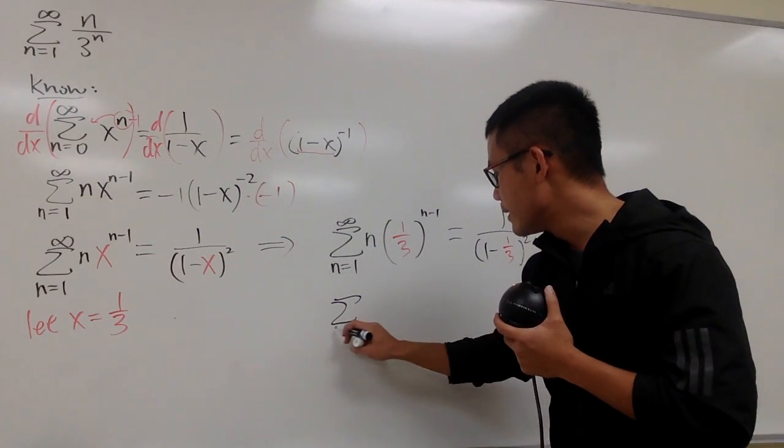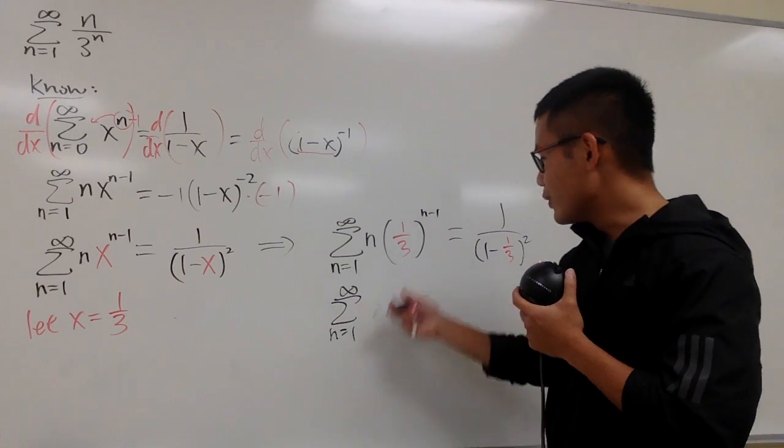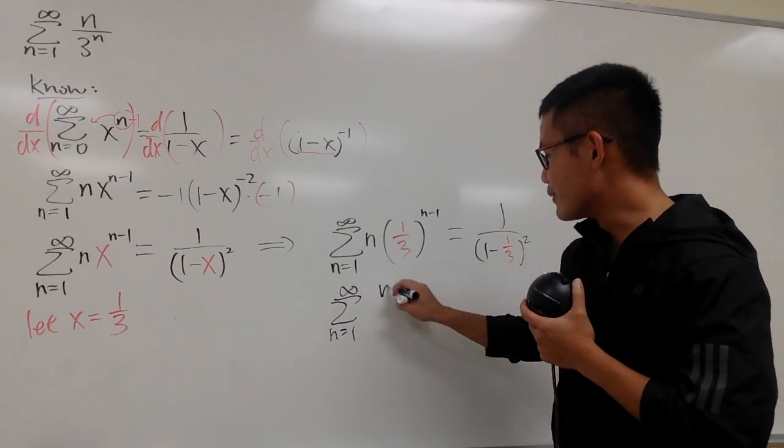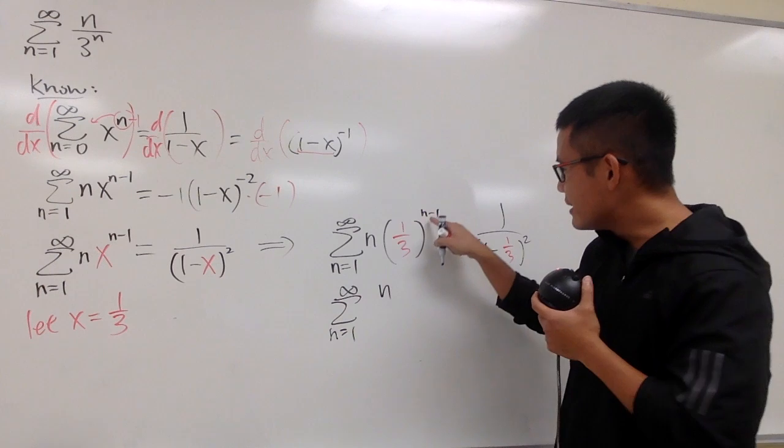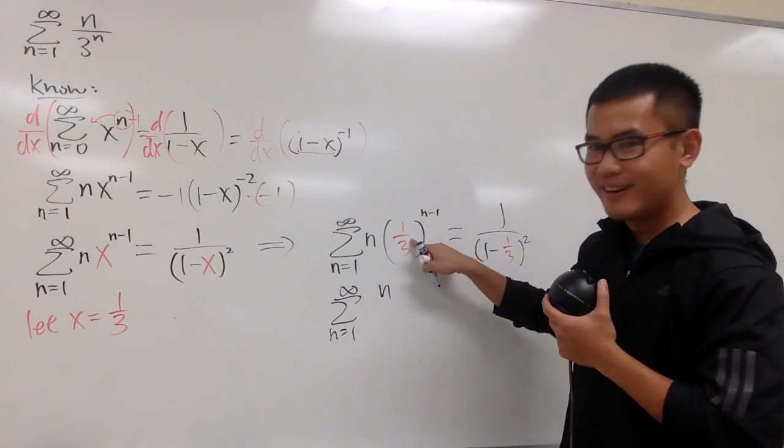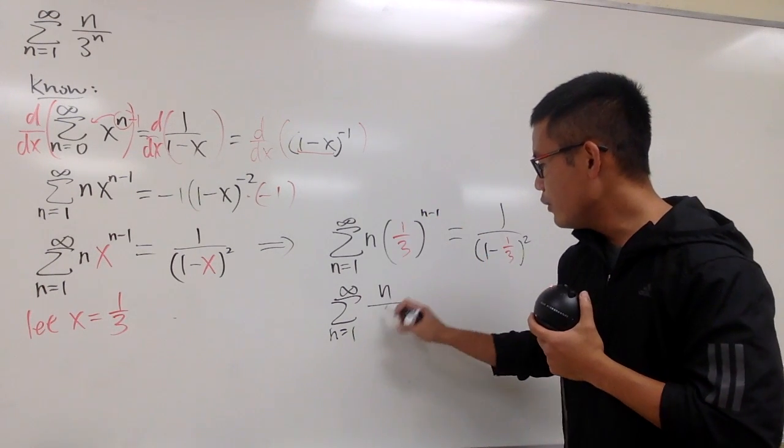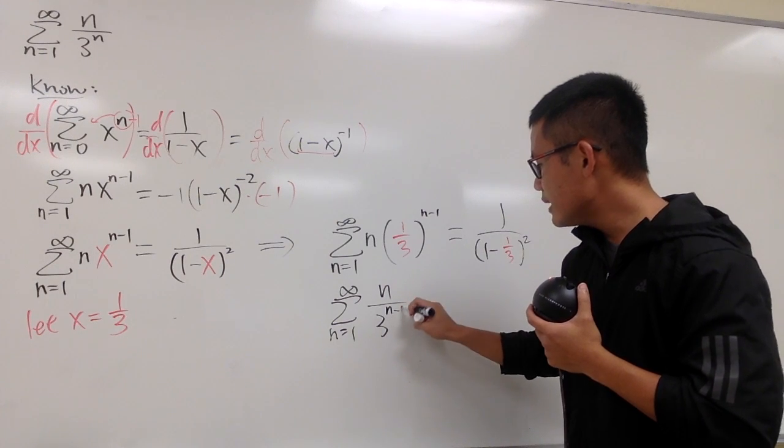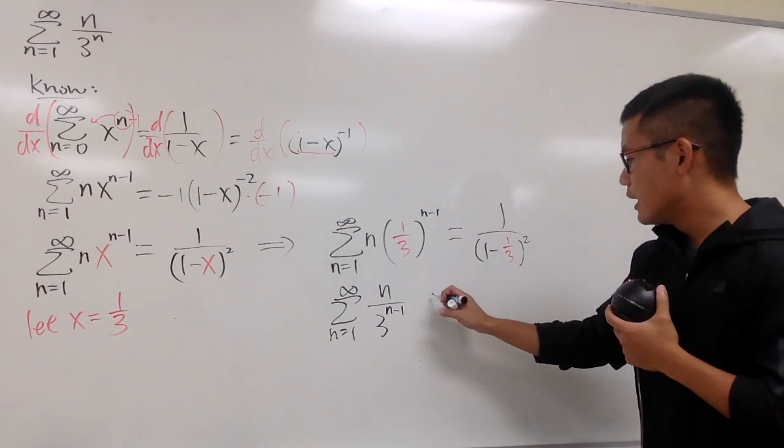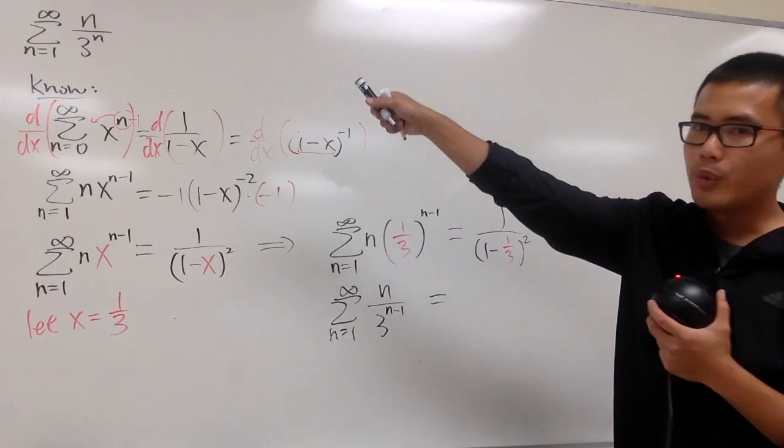Fix this a little bit. This is the sum, the series, n goes from 1 to infinity, n on the top now. And you see, n minus 1 goes here. So we have n over 3 to the n minus 1 power, that's what we have. And that's really close to what we want.